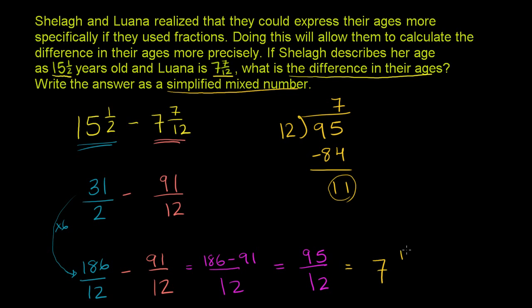So 12 goes into 95 7 times. You get 7 wholes, and you have 11 left over. So 95 over 12 is 7 and 11 twelfths. And we're done. The difference between Sheila and Luana's age is 7 and 11 twelfths, or Sheila is 7 and 11 twelfths years older than Luana.